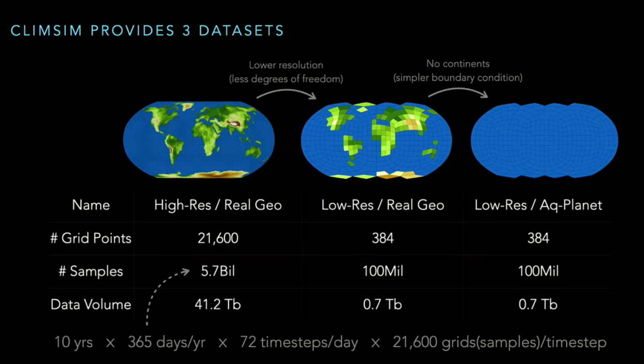ClimSim provides datasets in three flavors. The main dataset is the high-resolution, real-geography version. It alone contains 5.7 billion samples, and its data volume is 41.2 terabytes. At the same time, we provide a low-resolution counterpart, which is a simpler and more lightweight dataset for fast model prototyping.